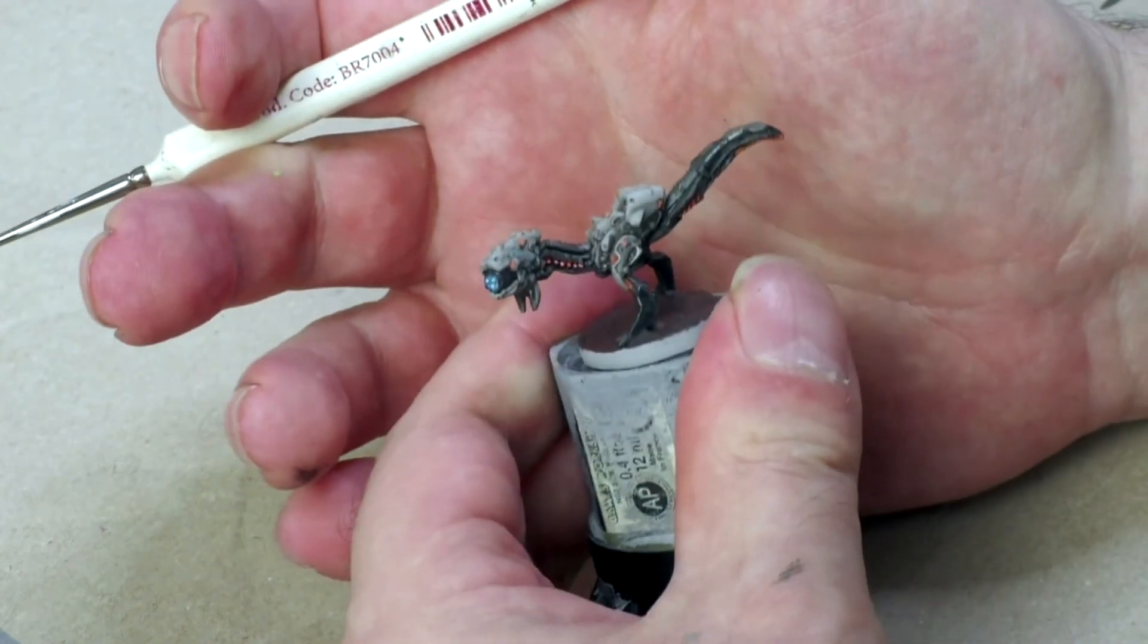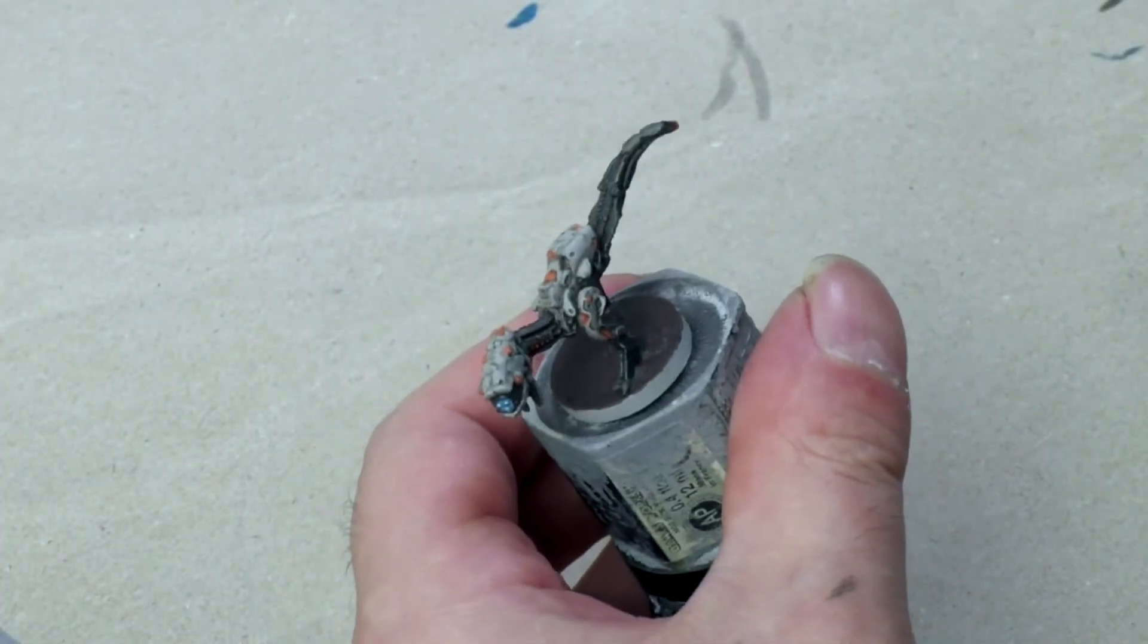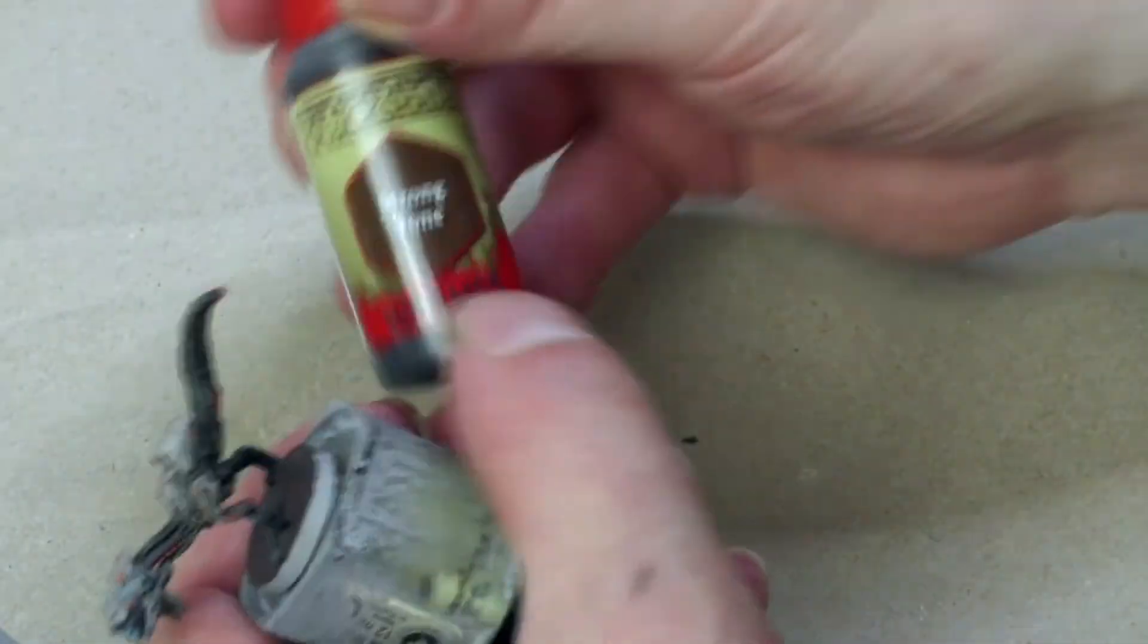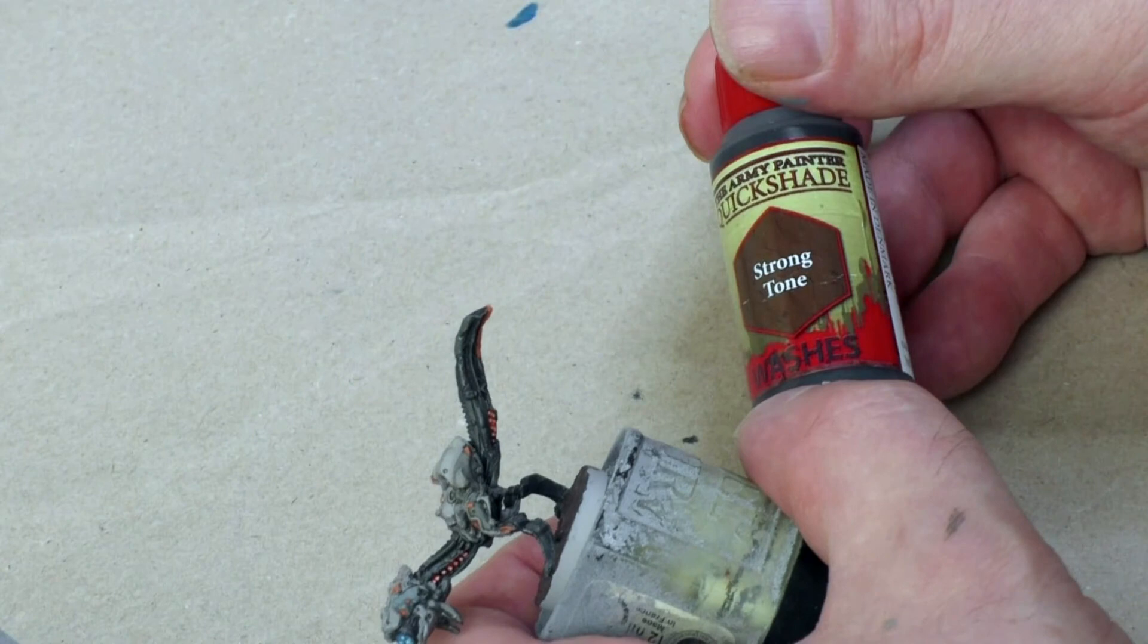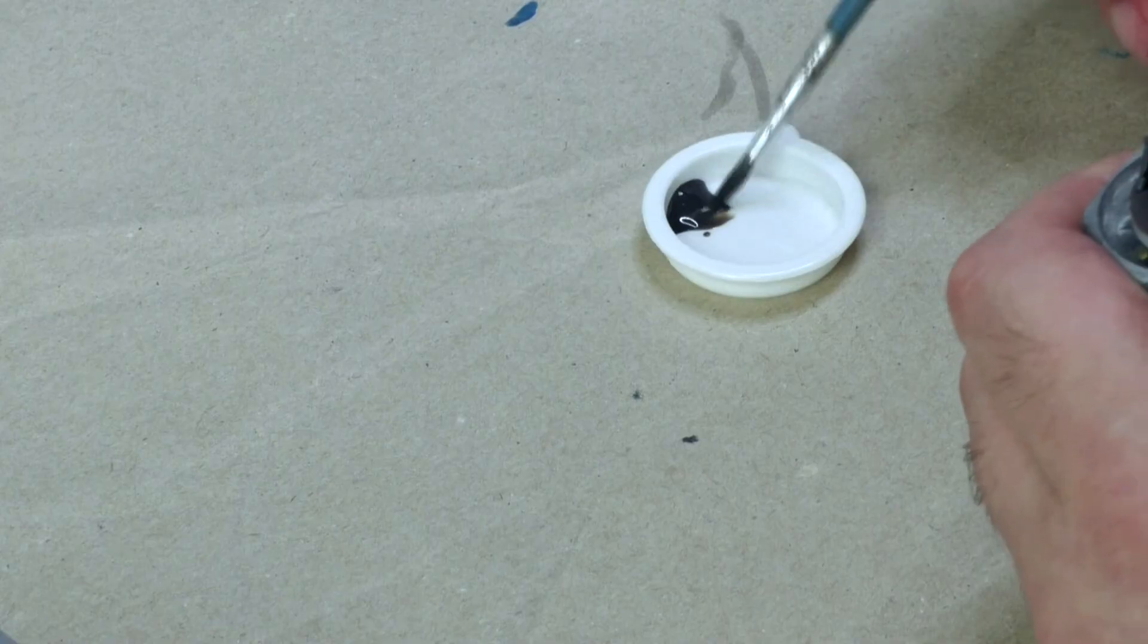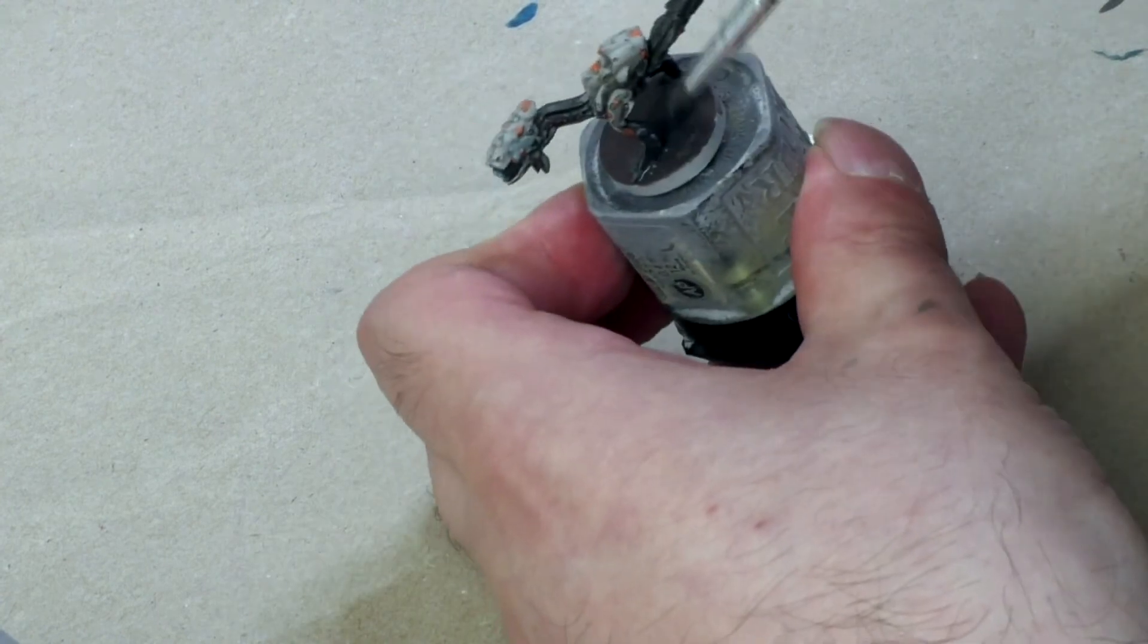When the texture paint on the base is almost dry, I'm going to enhance the contrast there as well. For that purpose, I'm using a brownish wash. This stuff here, Quick Shade Strong Tone by the Army Painter, is perfect. Again, the model needs some drying time after applying the shade.